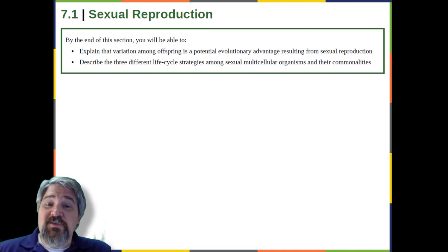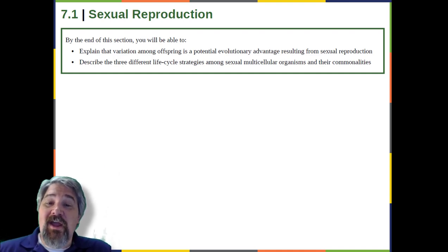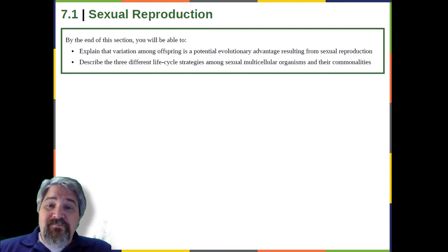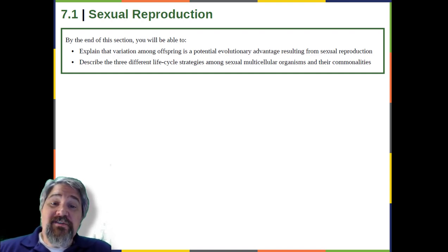Sexual reproduction was an early evolutionary innovation after the appearance of eukaryotic cells. The fact that most eukaryotes reproduce sexually is evidence of its evolutionary success. In many animals, it is the only mode of reproduction. And yet, scientists recognize some real disadvantages to sexual reproduction.